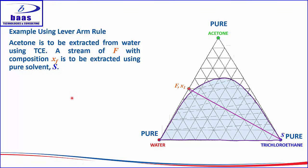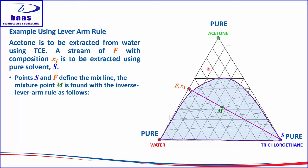We will look at an example where we extract acetone from water using trichloroethane. The feed F with composition XF is a binary mixture of water and acetone, located on the water-acetone binary base. The pure solvent S is trichloroethane, located at the trichloroethane vertex. The points S and F on the triangular ternary diagram define the mixing line.